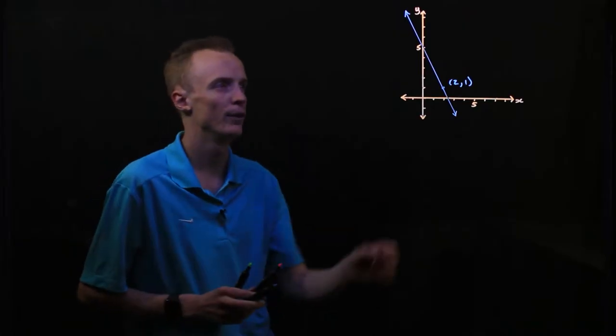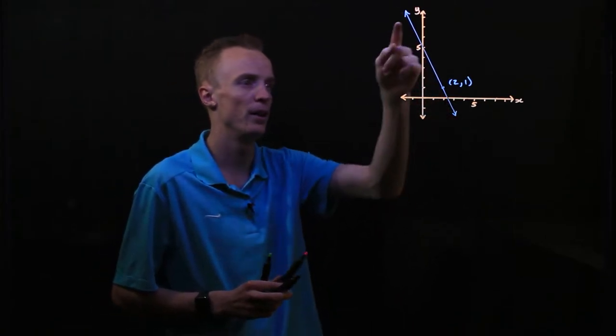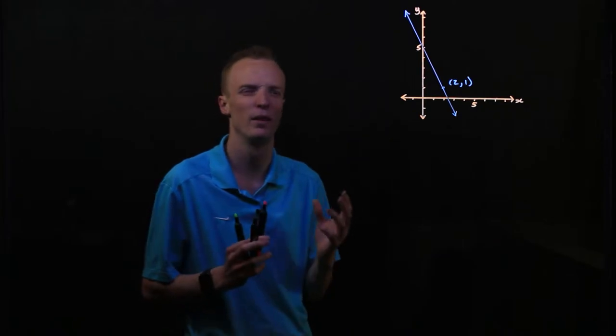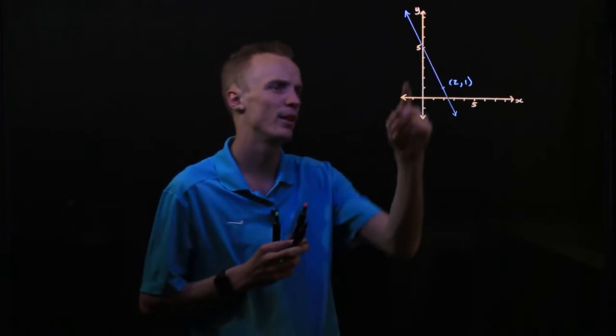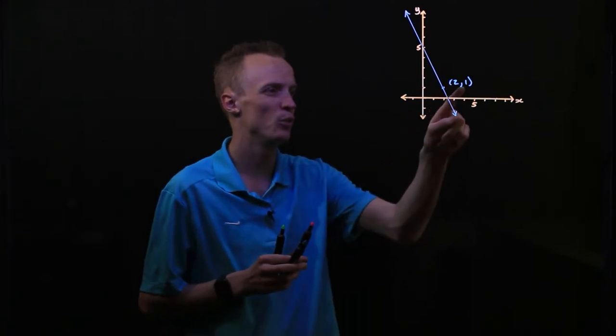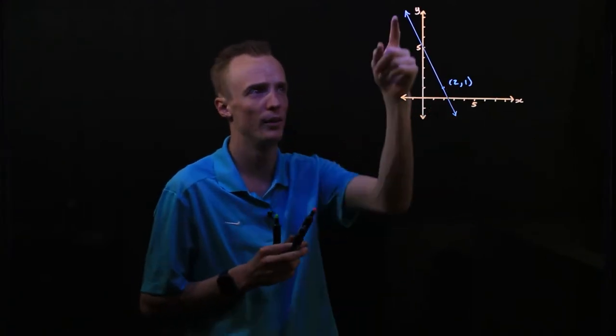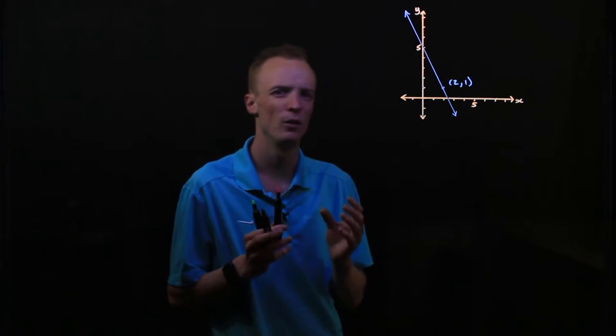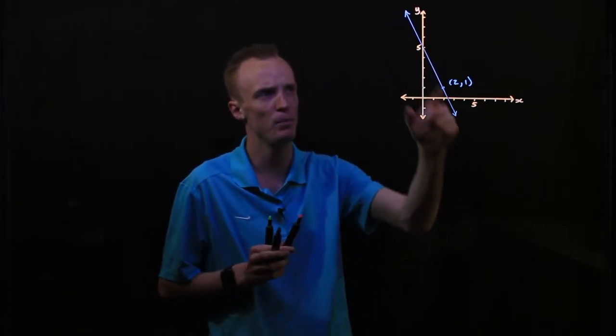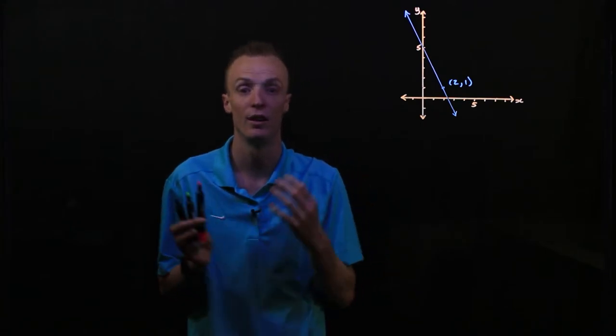On my right here, I've got this linear line that has been graphed. I can tell that it's cutting this y-axis at 5 and that the point (2,1) also lies on this line. Now a skill that I might want to be able to do is describe any point on this linear line using an equation.